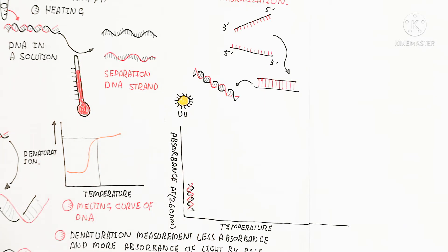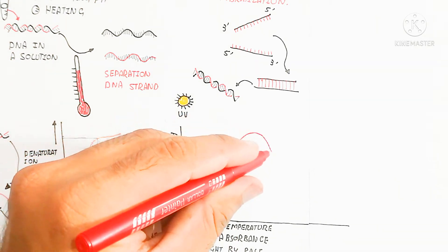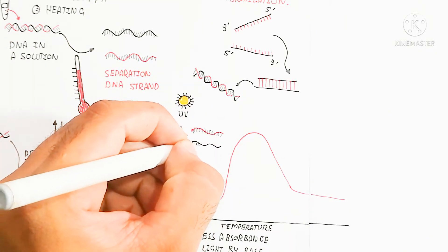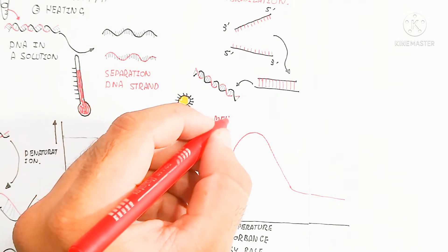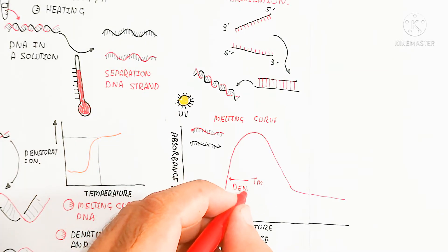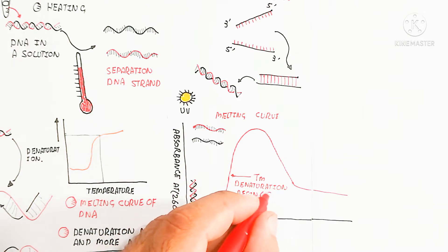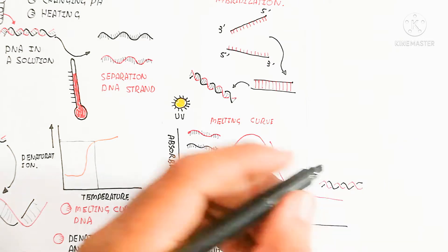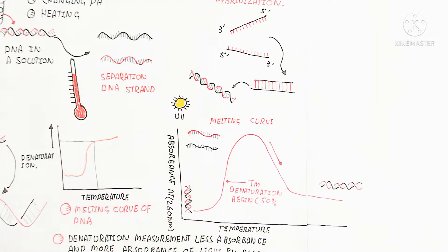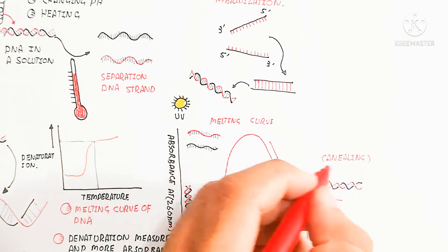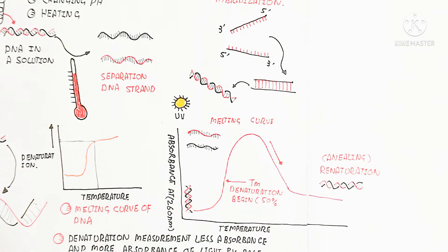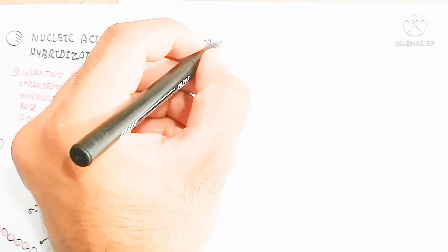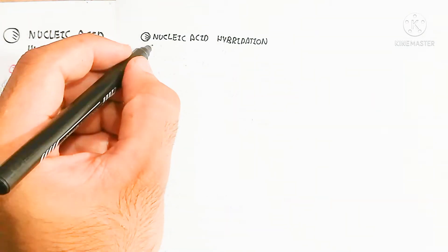The absorbance graph at 260 nm shows temperature on the horizontal axis and absorbance on the vertical axis. As temperature increases, 50% denaturation occurs at the threshold point — this is the melting point. In PCR, after denaturation, annealing or renaturation occurs when the temperature is quickly lowered. This is the artificial renaturation process used in the laboratory.